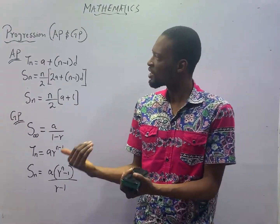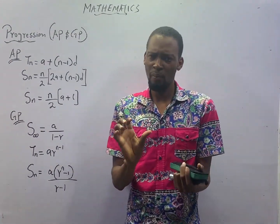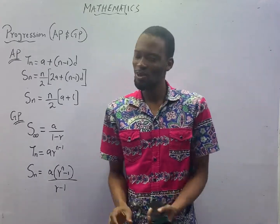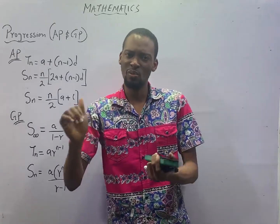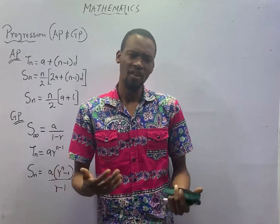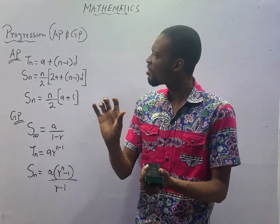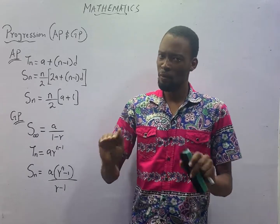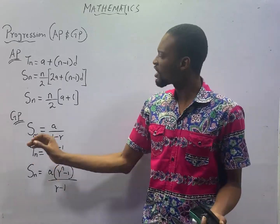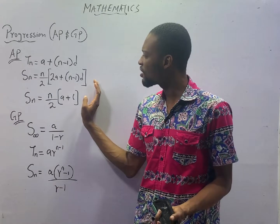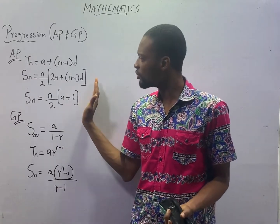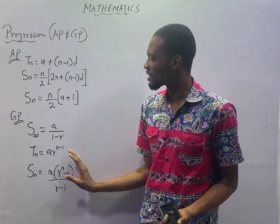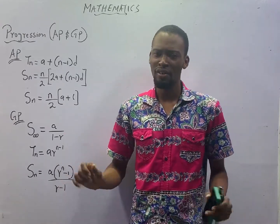In this episode, we shall be dealing with progression, and JAMB expects you to know arithmetic and geometric progression. This is a very, very easy topic in JAMB and in mathematics. For arithmetic progression, these three formulas will do for you. For geometric progression, these three formulas as well are okay for you.